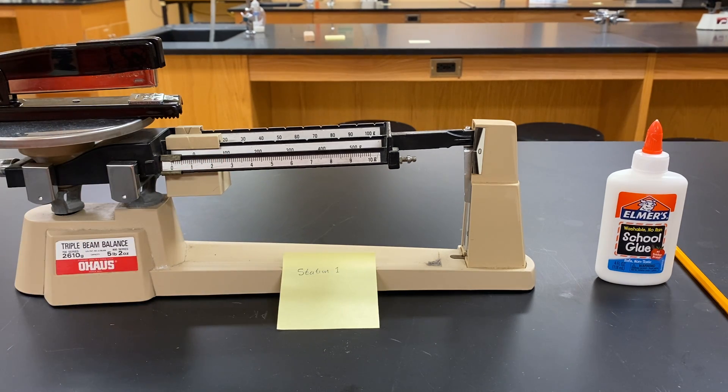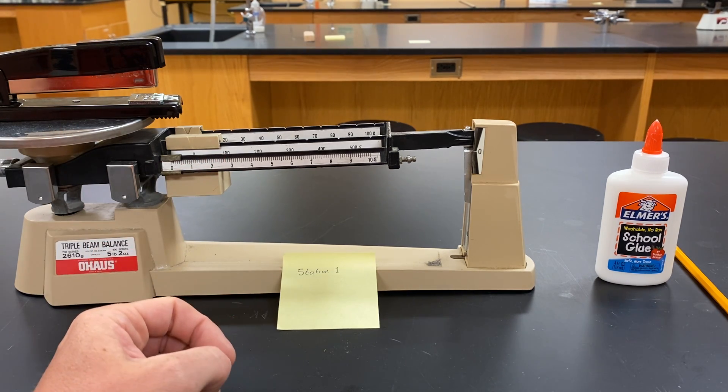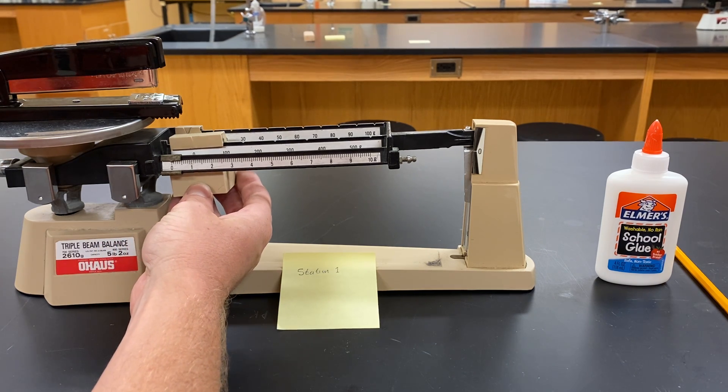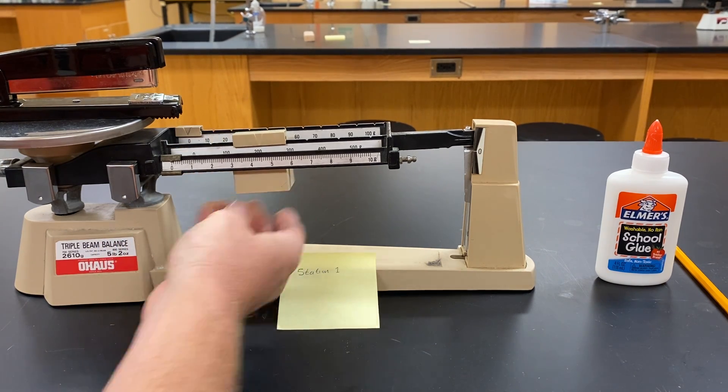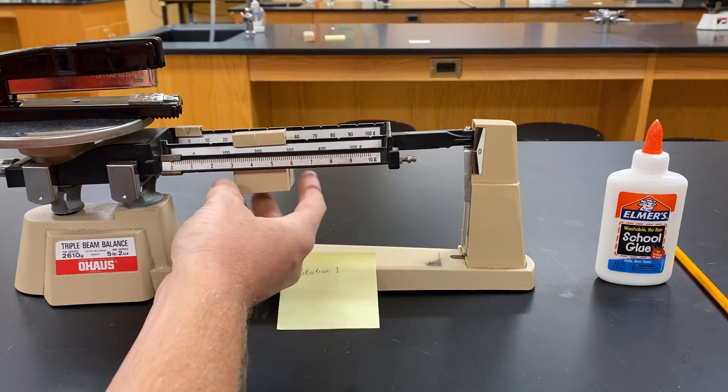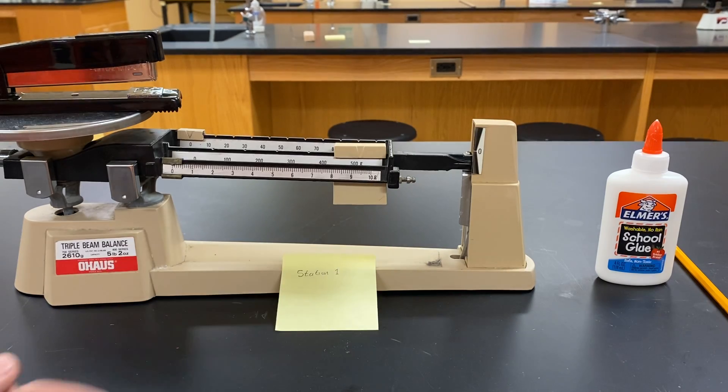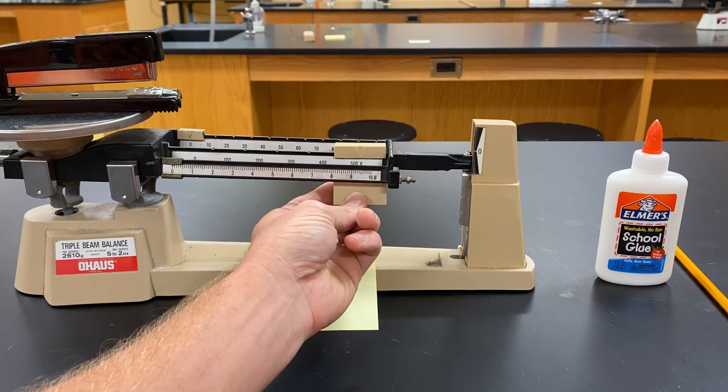We're going to have to balance it out with the weights. The first one we're going to start with is the largest one. We're just going to move it until this arm goes down. Right there at 500 grams we've got too much.